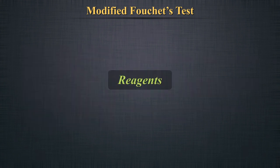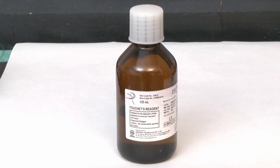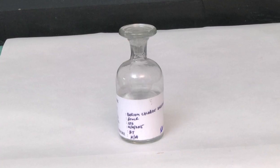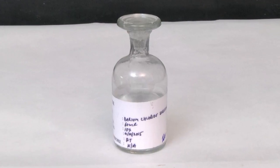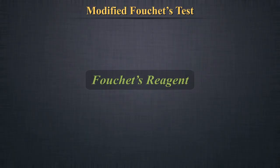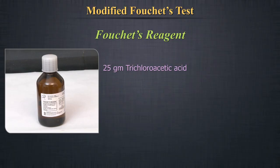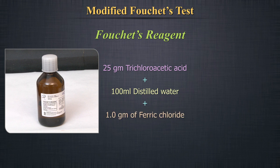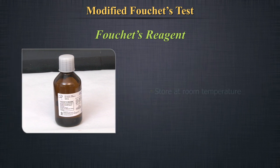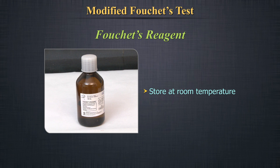Reagents: Foscis Reagent 1 — 10g per deciliter barium chloride. Foscis Reagent 2 contains 25g trichloroacetic acid dissolved in 100ml distilled water, to which 1g of ferric chloride is added. Store at room temperature in a cool, dry, ventilated place.